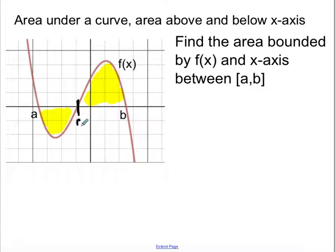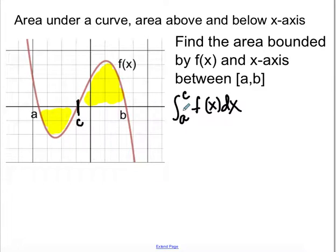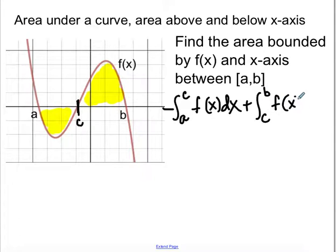To handle this, I'll call the point where the graph crosses the x-axis point c. We integrate from a to c of f(x) dx — because that area is below the x-axis, we'll get a negative value, so we make it negative (or take the absolute value). Then we add the integral from c to b of f(x) dx. The key is finding where the graph crosses the x-axis so we can handle each region correctly.